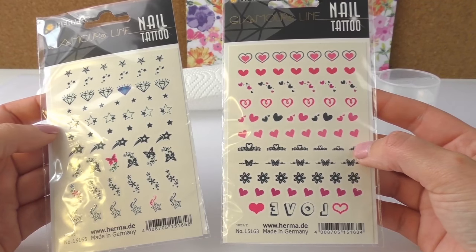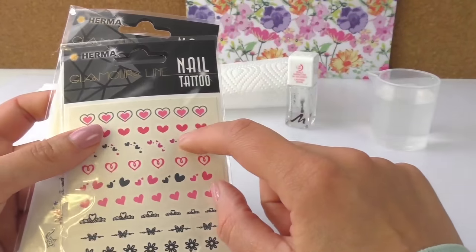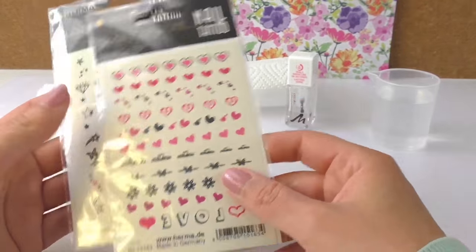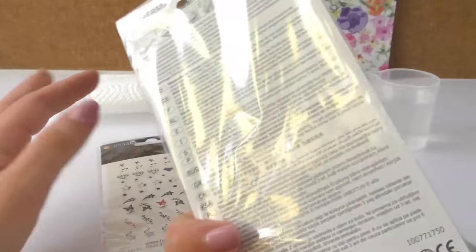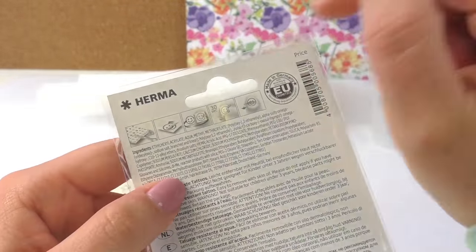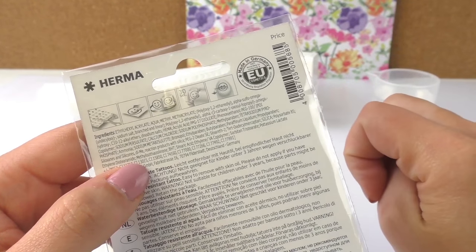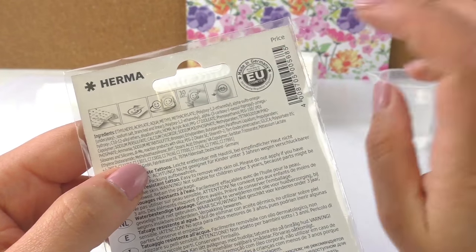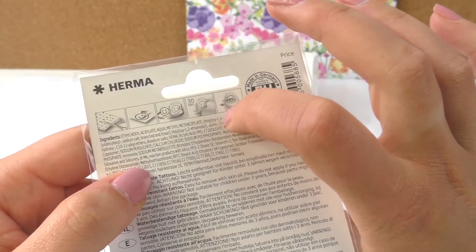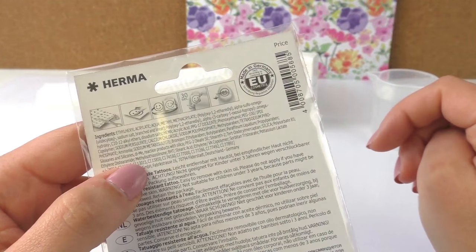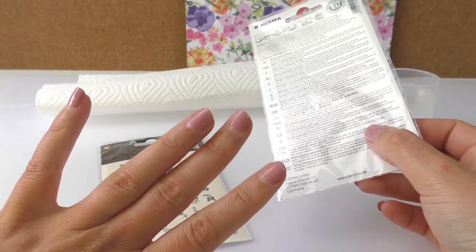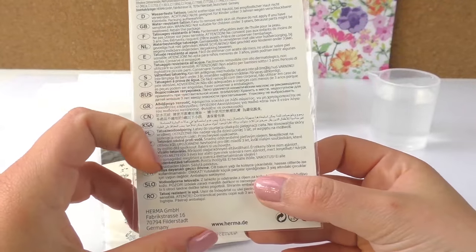As you can see, I've got two packs here. These are like hearts and love and stars and flowers and stuff. You've got pictures there and there's an explanation. They're waterproof, they're easy to remove, and obviously not for children under three years old.